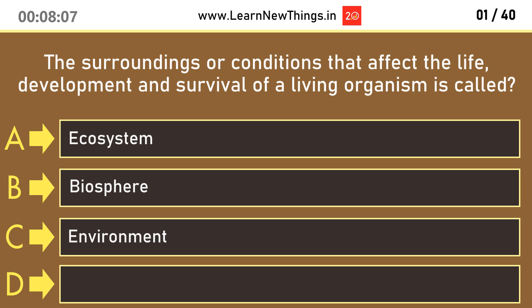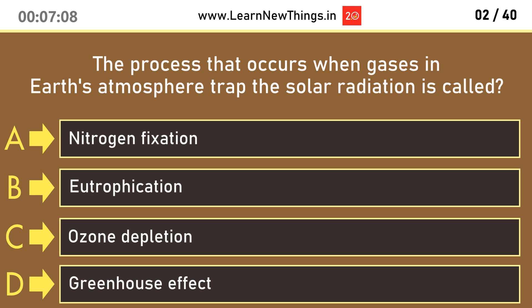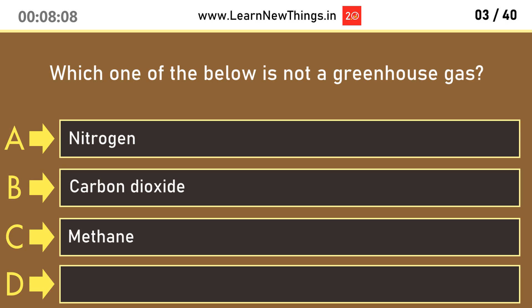The surroundings or conditions that affect the life, development and survival of a living organism is called Environment. The process that occurs when gases in Earth's atmosphere trap the solar radiation is called Greenhouse effect. Which one of the below is not a greenhouse gas? Nitrogen.